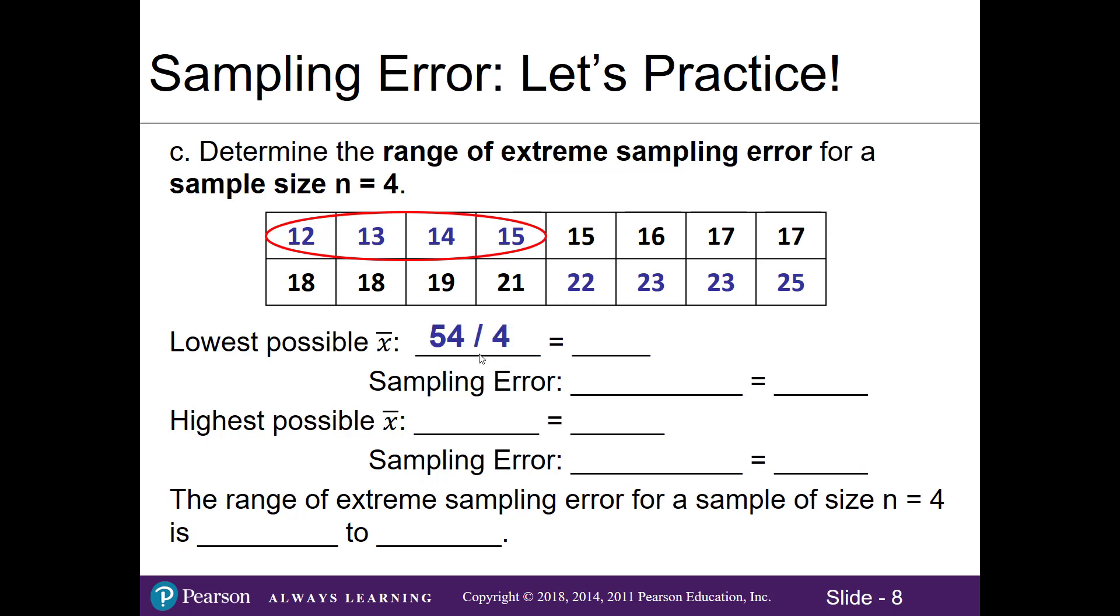The lowest possible sample mean that I can get is 13.5. Then for my sampling error we'll take our sample mean of 13.5 and subtract the population mean that we calculated in Part A, the 18, to find the sampling error. In this case it's going to be negative 4.5.